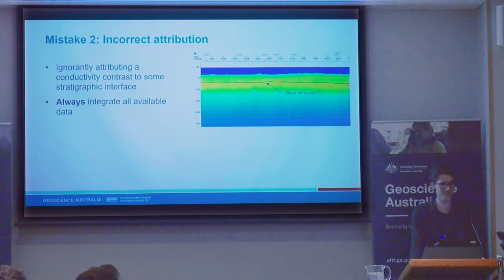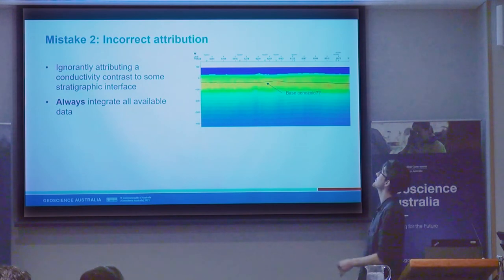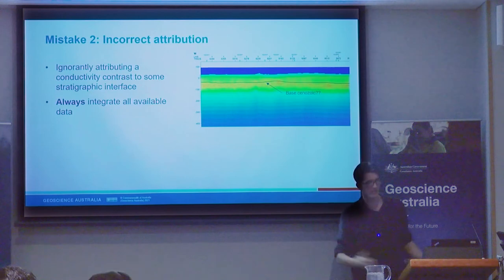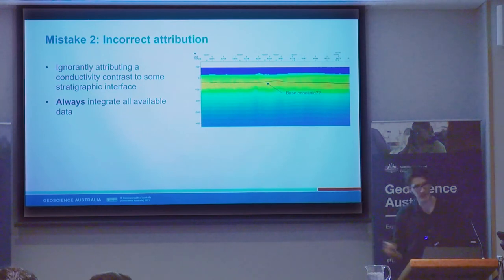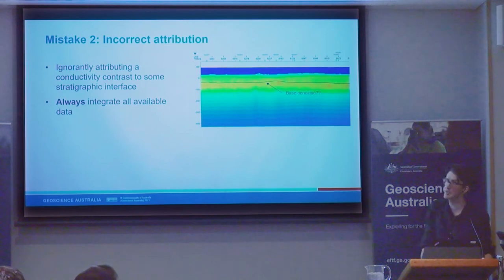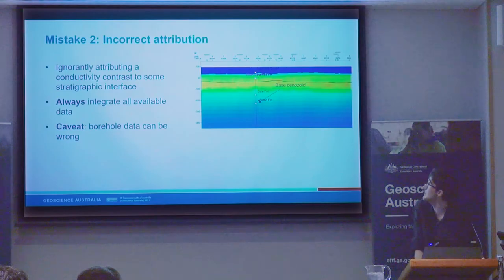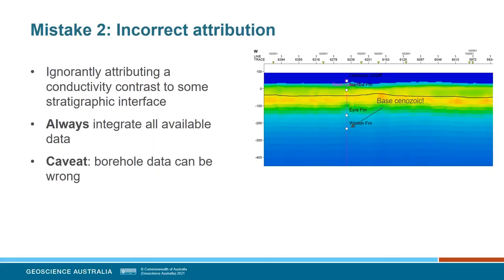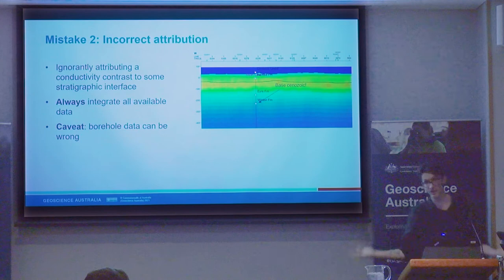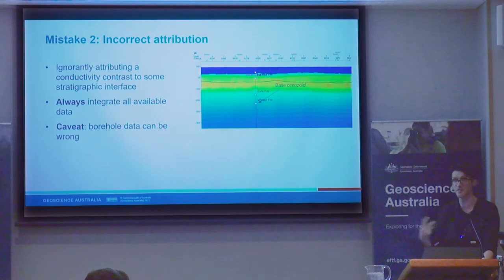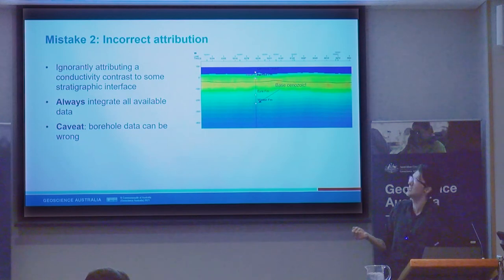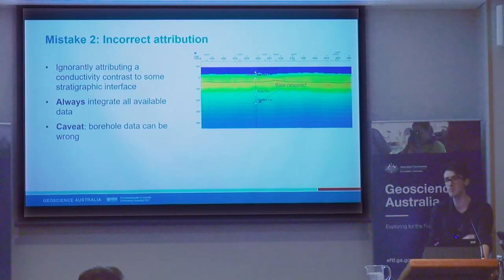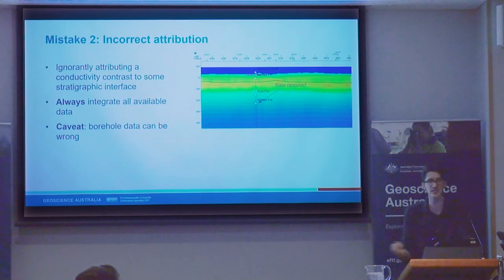Incorrect attribution. It's very tempting to say, 'I'm mapping the base of the Cenozoic — that interface, I don't have any bores I can find, so I'm going to call it the base of the Cenozoic.' In this real example, there was a bore that the interpreter had overlooked. The base of the Cenozoic was actually much deeper — this was some other interface — and so they would have put it more than 200 metres in the wrong spot. Borehole data can also be wrong and is often internally inconsistent, but before you go putting lines on a map, you want to be confident that you have done the initial work to integrate the existing data.